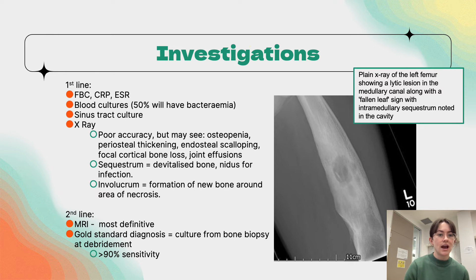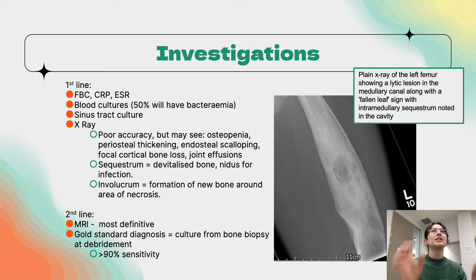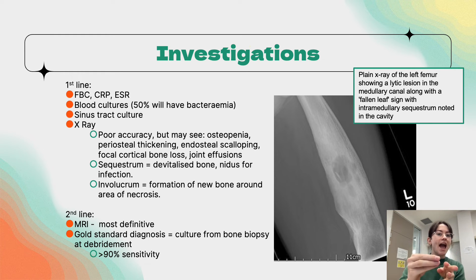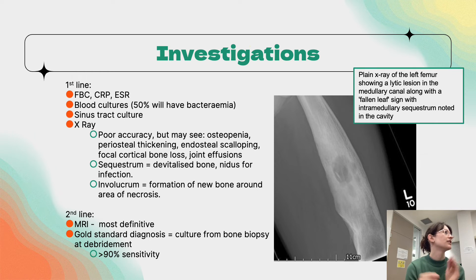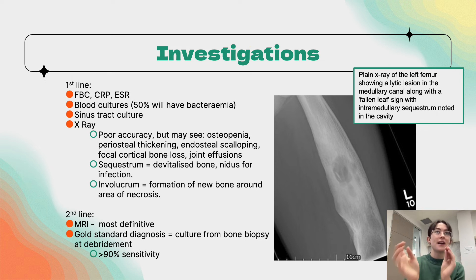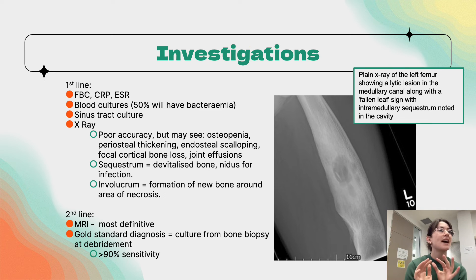The sequestrum is the portion of necrotic bone where bacteria reside — it serves as the nidus for infection and is the point antibiotics cannot adequately penetrate. The involucrum is the formation of new bone around that infection, which makes treatment even more difficult.